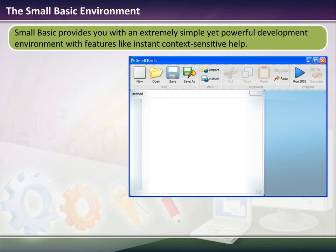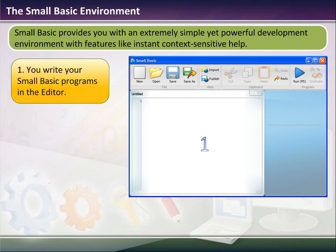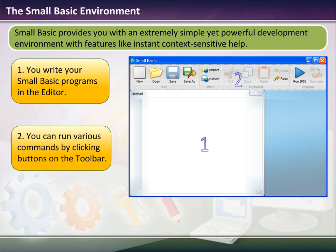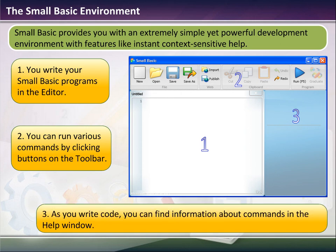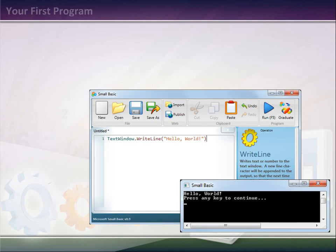Small Basic provides you with an extremely simple yet powerful development environment, and it helps you every step of the way. Section 1, highlighted here, is where you actually write your programs in the editor. Section 2, which is highlighted, is where you can run various commands by just clicking on the toolbar. Section 3 is where, as you write your code, you'll find additional information — it's called the help window — and it'll define what the command does and what arguments are available.